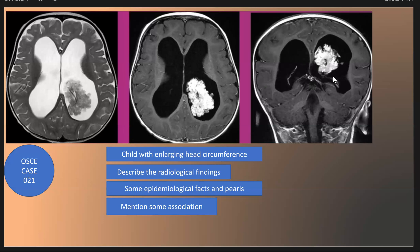And we see here the signal void is still seen, along with the lobulated appearance of the mass. The mass is associated with ventricular enlargement — moderate to marked ventricular enlargement.